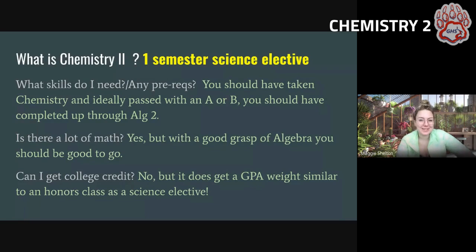Chemistry 2 is a one semester science elective. You should have taken chemistry regular honors and passed, ideally with an A or a B. And you should have taken or be in, but ideally have already finished, algebra 2. Because there's a medium amount of math and it's mostly algebra related. It doesn't have college credit, but it does get GPA weighted like an honors class because it is a science elective.